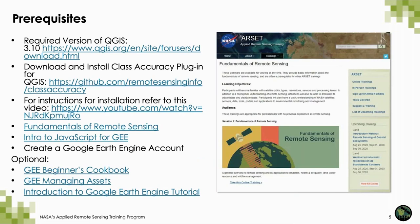We listed some prerequisites on the RSET website. For today we will not be using QGIS, but for previous sessions you will need QGIS 3.10 and the class accuracy plugin. We have also provided additional resources such as fundamentals of remote sensing, intro to JavaScript for Google Earth Engine, and you will need a Google Earth Engine account. We've also provided links to the GEE Beginners Cookbook, GEE Managing Assets, and an introduction to Google Earth Engine tutorial.